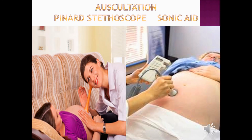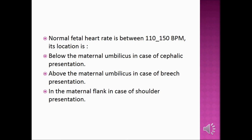Auscultation is performed using a Pinard stethoscope or Sonicaid. The normal fetal heart rate is between 110 and 150 beats per minute. Its location is below the maternal umbilicus in cephalic presentation, above the maternal umbilicus in breech presentation, and at the maternal flank in shoulder presentation.